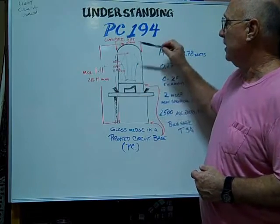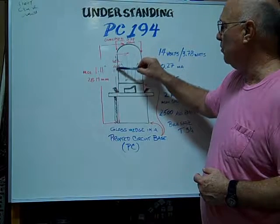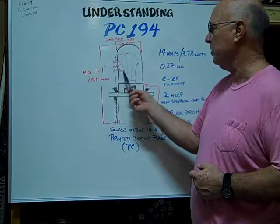The light center length is 0.45 inches, 11.43 millimeters.